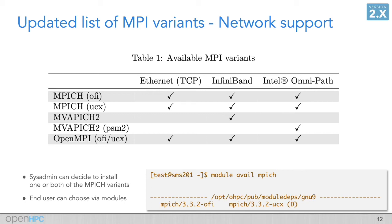They are designed so that both can be co-installed. And the end user can choose, via the module system in OpenHPC, which particular variant of MPICH they would like to use. So we see here in this slide the fact that an administrator has installed both MPICH variants, and that the default in this case is UCX.